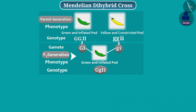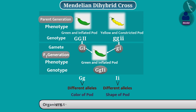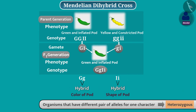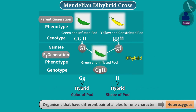In these plants, there are two different alleles for pod colour and pod shape. Organisms that have different pair of alleles for one character are called heterozygous, also called hybrid. Plants of F1 generation are heterozygous for two characters. Therefore, these are called dihybrid.